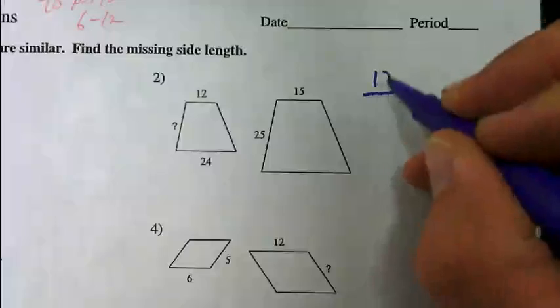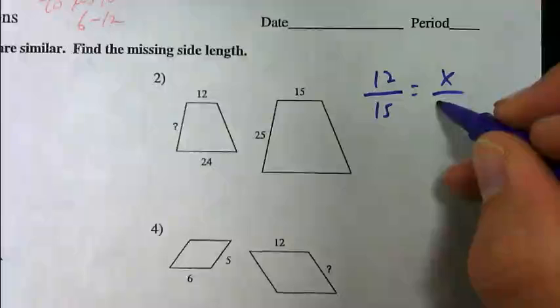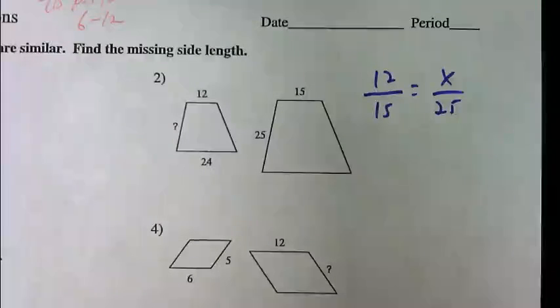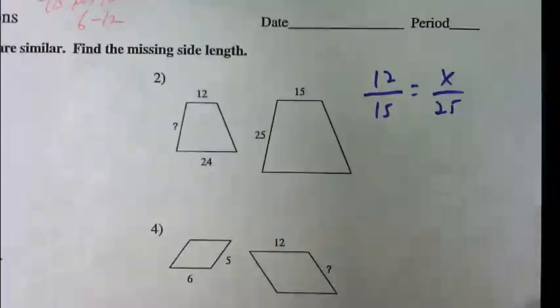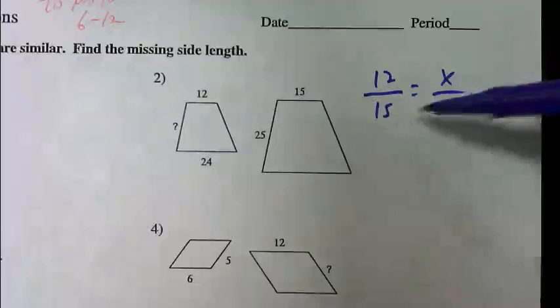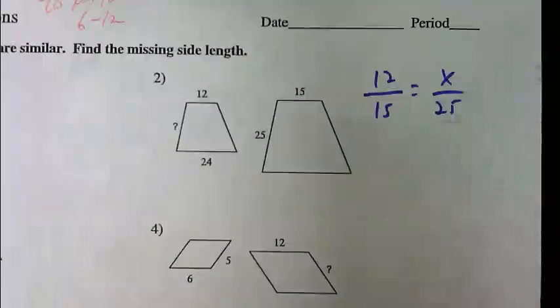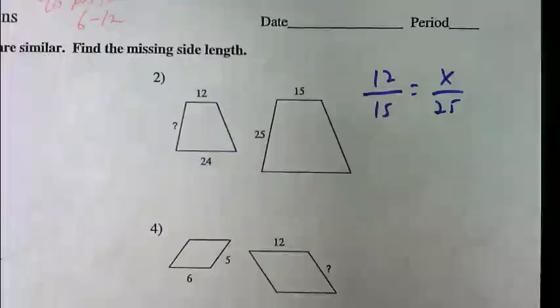You said 12 over 15 equals x over 25. So we're setting it up so that we have the corresponding positions in the same fractions, and we took the top values from the smaller figure, the bottom ones are from the bigger figure.